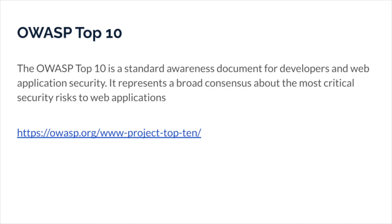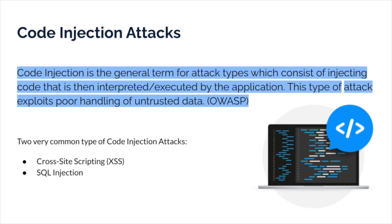Let's talk about injection attacks, which are some of the most common attacks. Code injection is a general term for attack types which consist of injecting code that is then interpreted and executed by the application. This type of attack exploits poor handling of untrusted data, from the OWASP site. Basically, code injection attacks are when you're able to input code and that code gets interpreted. For example, when you're logging into a website and instead of putting your username, you put malicious code and it actually executes — that means the input is not being properly sanitized or filtered, which is allowing the code to execute.